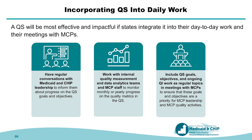Ultimately, your state's quality strategy will be most effective if you integrate it into your day-to-day work. You can consider doing the following to maximize the impact of the quality strategy: have regular conversations with Medicaid and CHIP leadership to inform them about progress on quality strategy goals and objectives; work with internal quality measurement and data analytics teams and managed care plan staff to monitor monthly or yearly progress on the quality metrics included in the quality strategy; and include quality strategy goals, objectives, and ongoing quality improvement work as regular topics with managed care plans. This will help ensure that these goals and objectives are a priority for managed care plan leadership and quality activities.